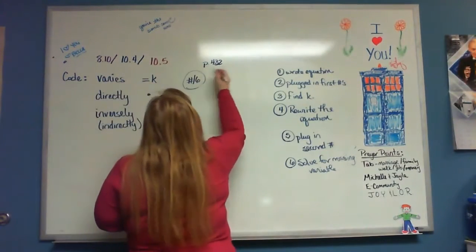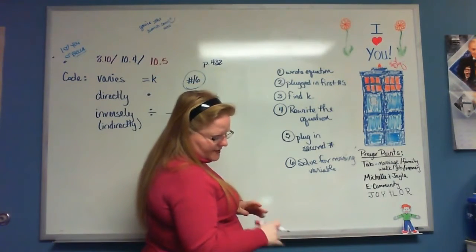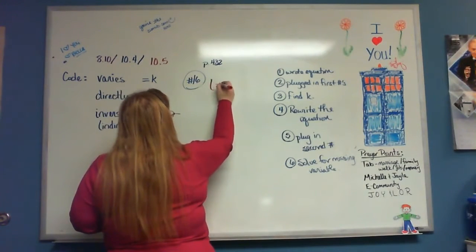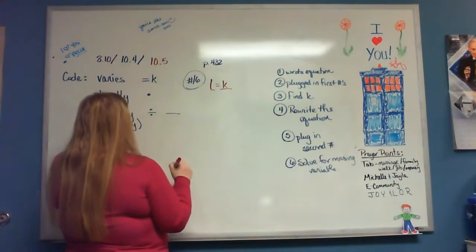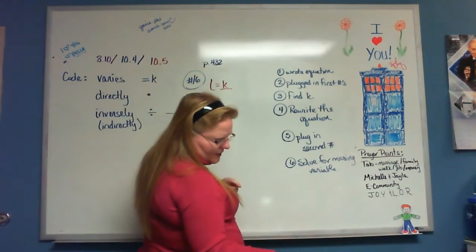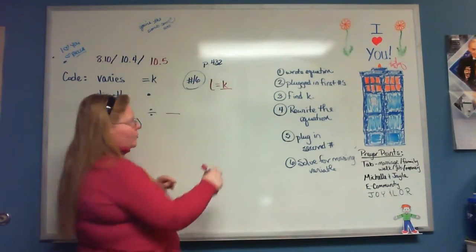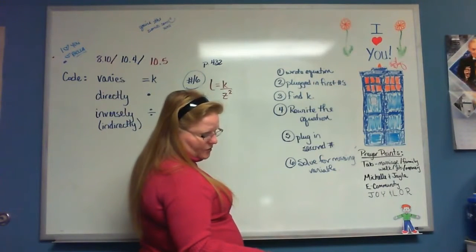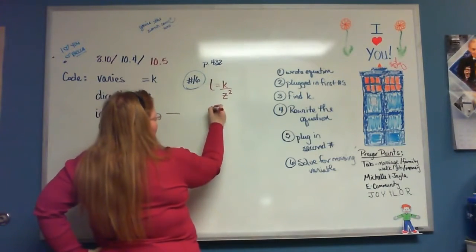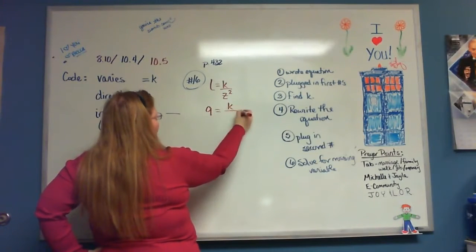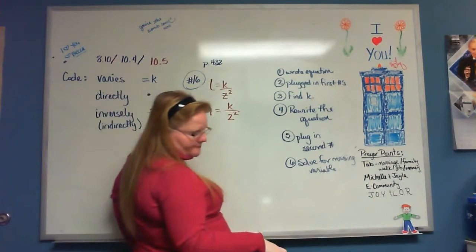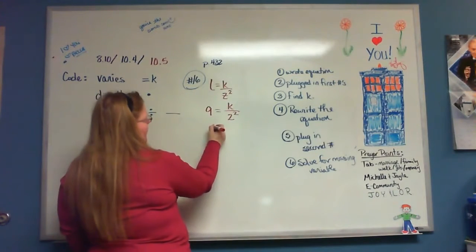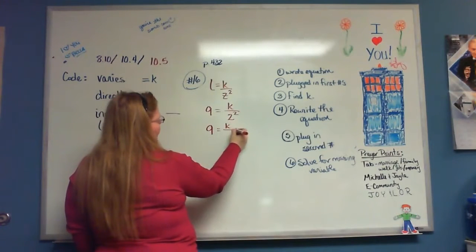Switching colors because this really is section 10.5. Number 16 says L varies indirectly — inversely, indirectly — with Z squared. So L equals K over Z squared. If L equals 9 when Z equals 2, I plug in: 9 equals K over 2 squared, which is K over 4.